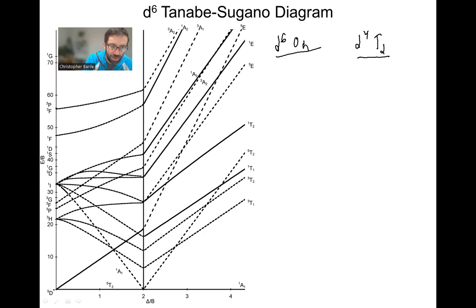If we're at an energy of zero, that's going to be the ground state. Energy of 40 is 40B, 40 times more than B. Same idea with the units for delta. Delta is the gap between EG and T2G for delta O for octahedral complexes, or it's delta T, the gap between T2 and E ligand set for tetrahedral.